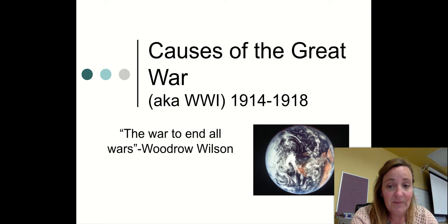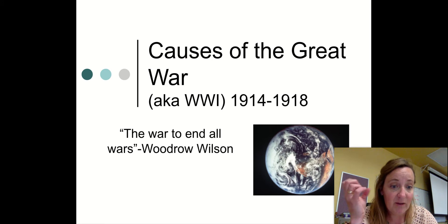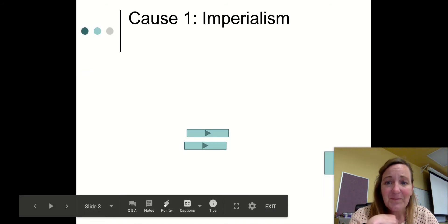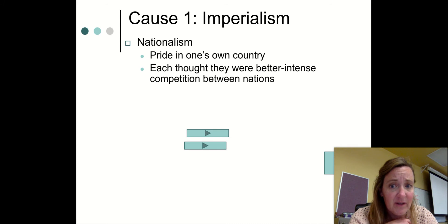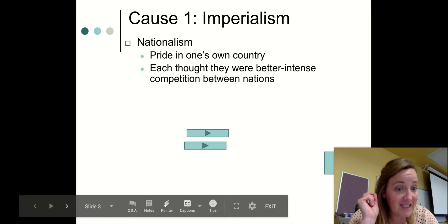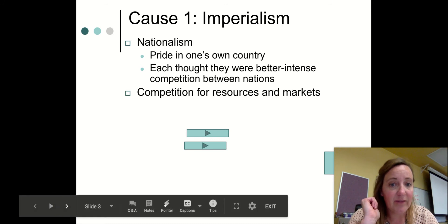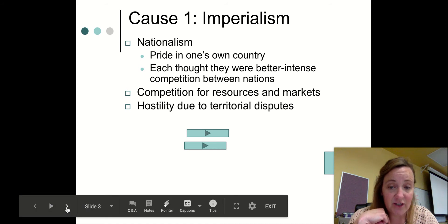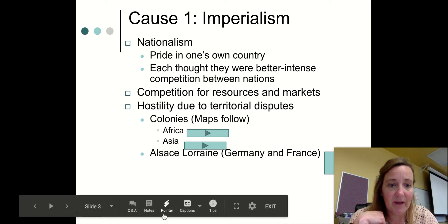A lot of people thought the reason the United States got involved was that they would end wars for the future and we would never do this again — which is not true. The first cause is imperialism. Each country thought it was better and was in intense competition for power throughout the world. There were limited resources and markets to sell goods because of the Industrial Revolution, and so European countries started to have territorial disputes over African and Asian countries they had taken over.